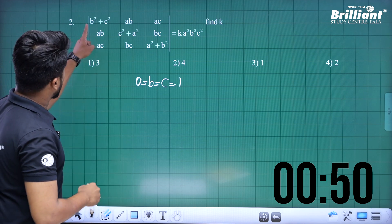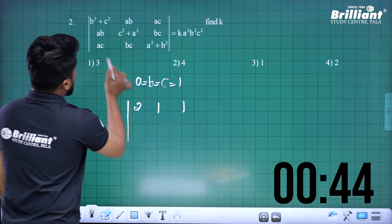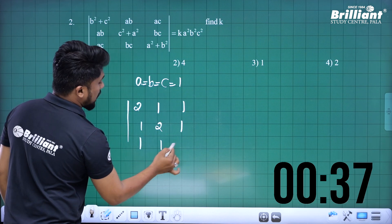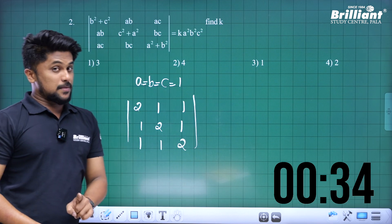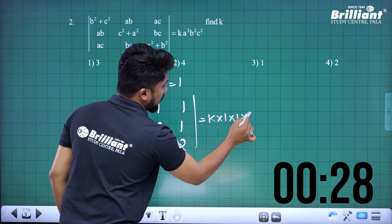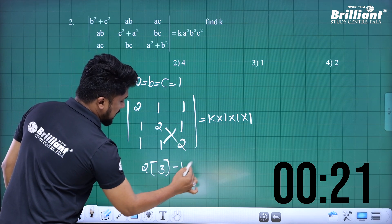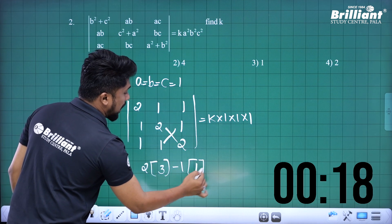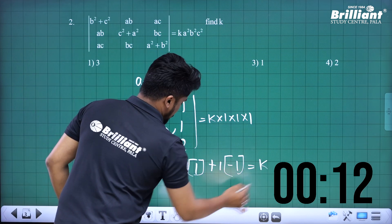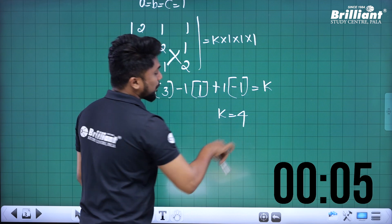How do we find this? 1 squared plus 1 squared equals 2. AB: 1 into 1 equals 1. AC: 1 into 1 equals 1. AB again equals 1. C squared plus A squared: 1 squared plus 1 squared equals 2. Again 1 here, 1 here, and 2 here. Now we apply to get K into A squared: 1 into 1 into 1. So 2 into A squared: 4 minus 1 equals 3. Then minus 1 into minus 1 into 2 minus 1 equals 1. Plus last: 1 into 1 minus 2 equals minus 1. Equal to K. So 2 into 3 equals 6, minus 1 equals 5, minus 1 equals 4. So K equals 4.